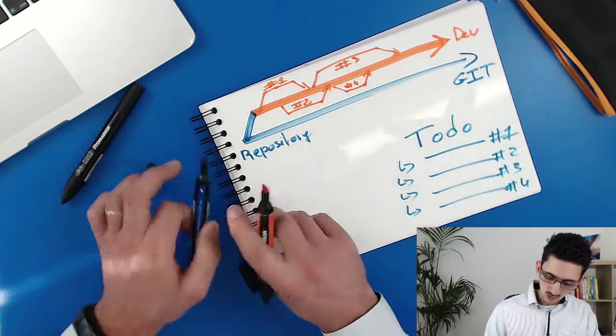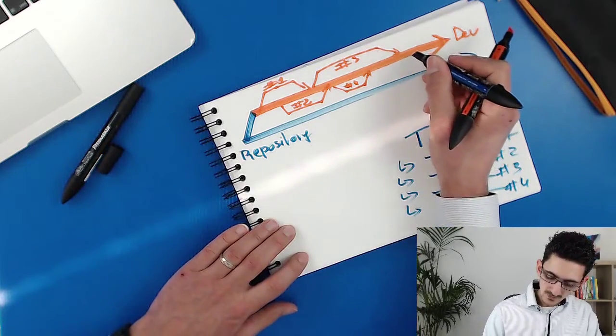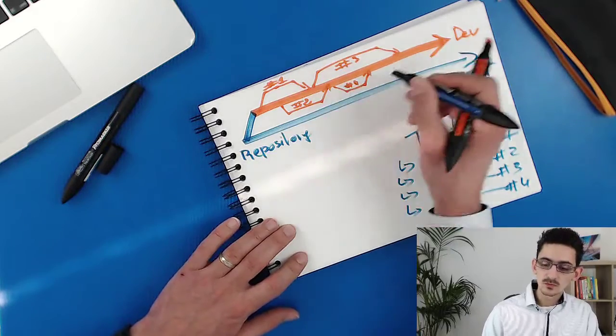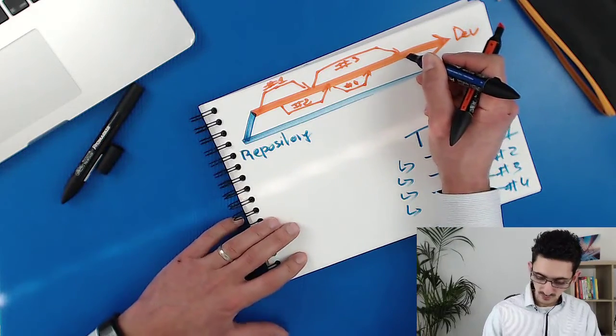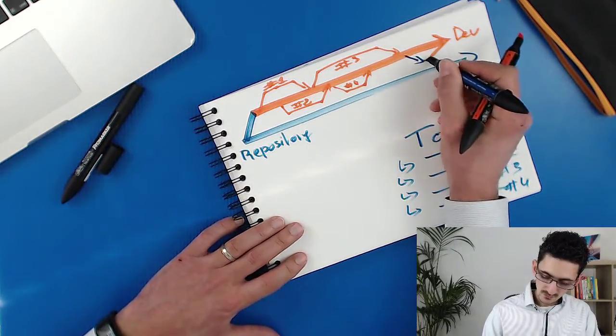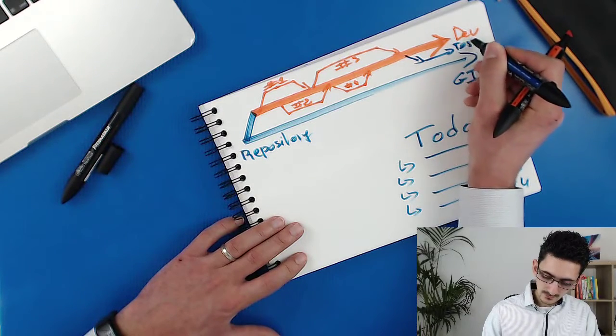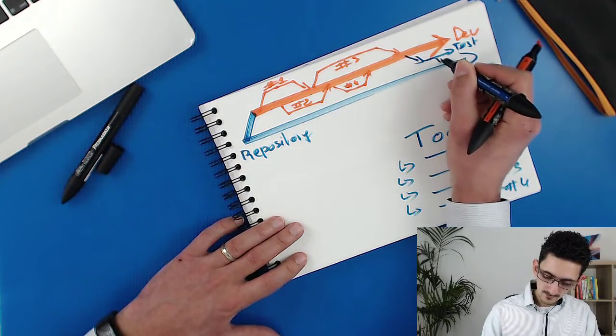And then, only then, when you finished all the features that you wanted to do in the sprint, then you can put it in test and then in production. And you're going to create what is called a tag.